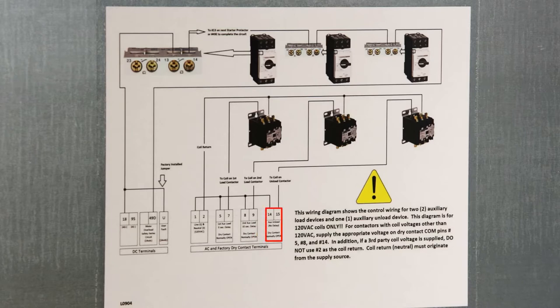Proceeding on to the right, we would also have dry contacts on 14 and 15 and that would be for your unload system. So if you want to tie your takeaway system in, these are dry contacts that would turn on your takeaway system.